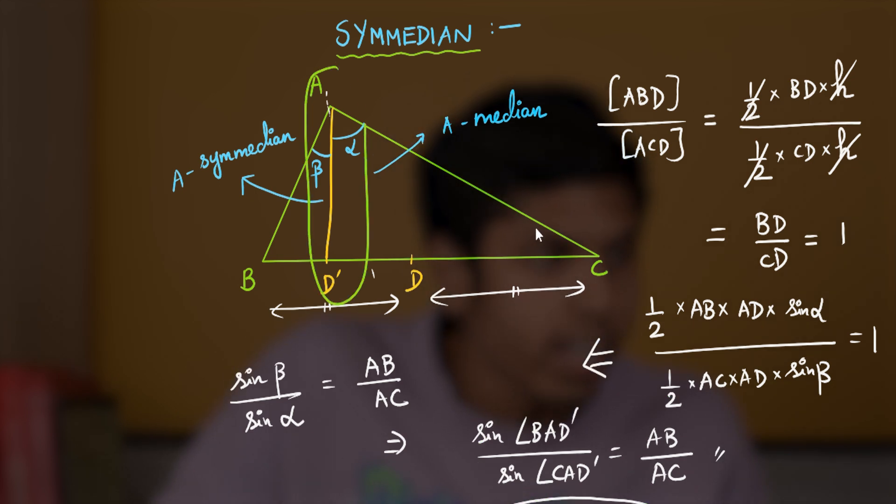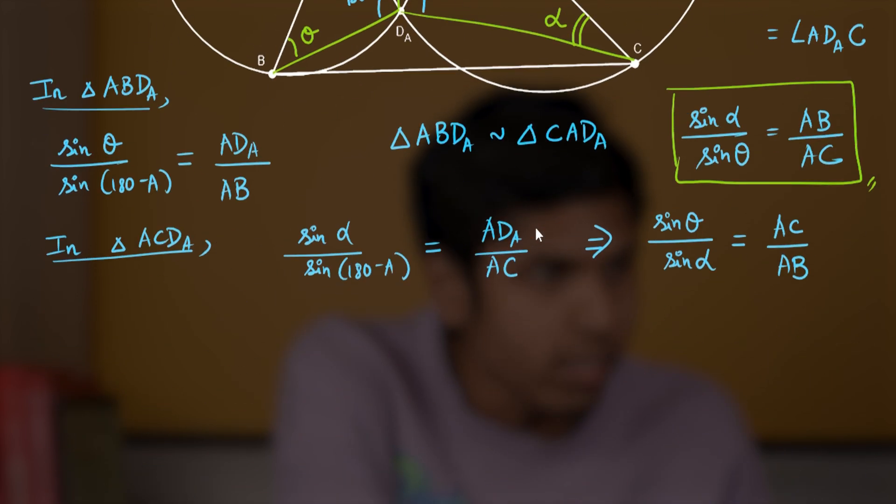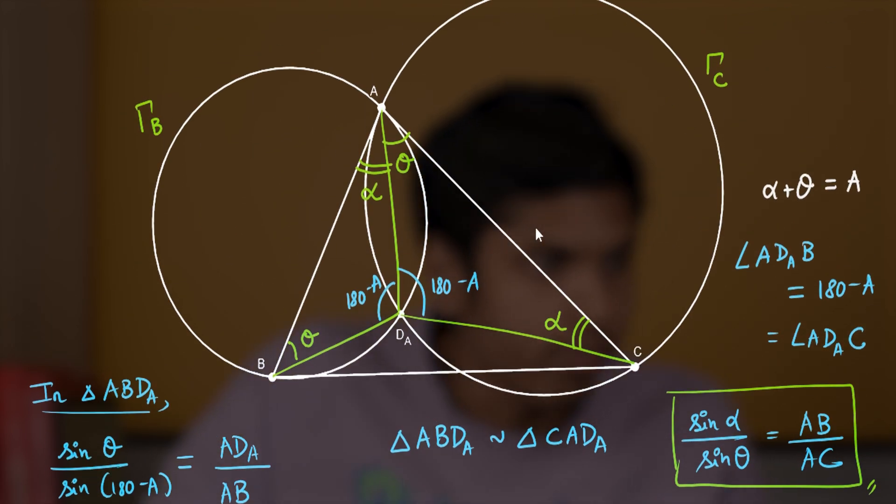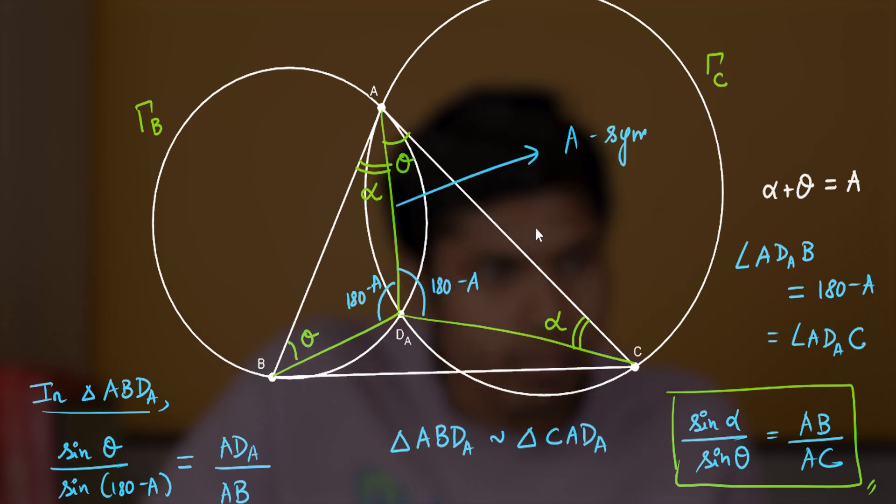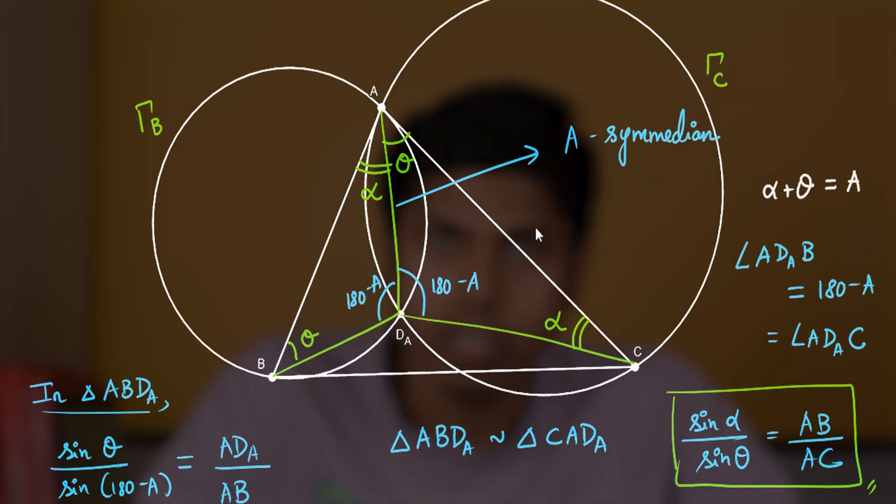And therefore, we conclude that AD_A is the AC-median. Or equivalently, D_A, the A Dumpty Point, lies on the AC-median of the triangle ABC.